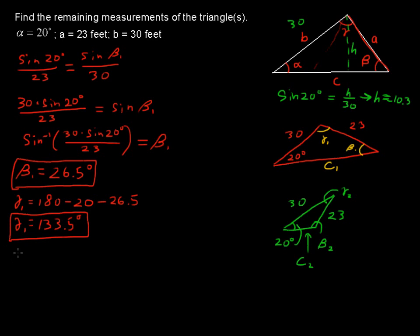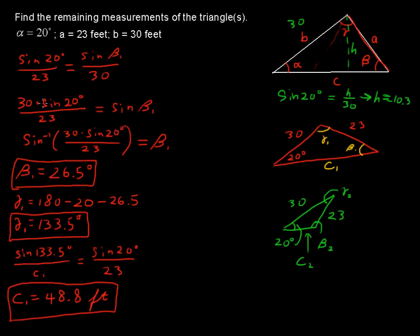The third thing we need is c sub 1. So we can keep going with that. The law of sines, that's sine of 133.5 degrees over c sub 1 equals, let's use the ones that are not rounded, the sine of 20 degrees over its opposite side of 23. I'm not going to show the solving of this one. I'm just going to, in the interest of space as well, I'm just going to write c sub 1 equals about 48.8 feet. We have solved that triangle, the one in red, now in green.